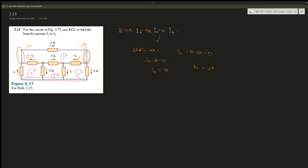We can check using the last node: i1 is 12A leaving, plus 3A, plus 5A (i3), plus 4A (i4 magnitude) — this gives 0, confirming our answers. So to summarize: i4 is negative 2A and i3 is 5A. Hopefully this was helpful — see you in future videos!